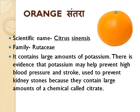Orange, Santara, scientific name Citrus sinensis, family Rutaceae. It contains large amounts of potassium. There is evidence that potassium may help prevent high blood pressure and stroke. It is also used to prevent kidney stones because oranges contain large amounts of a chemical called citrate.